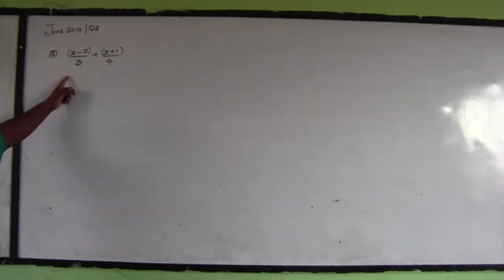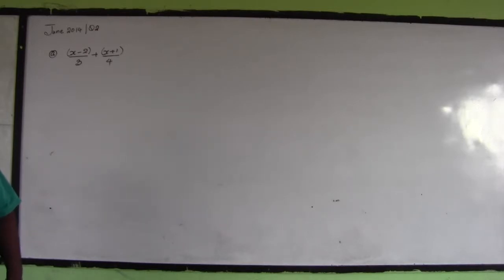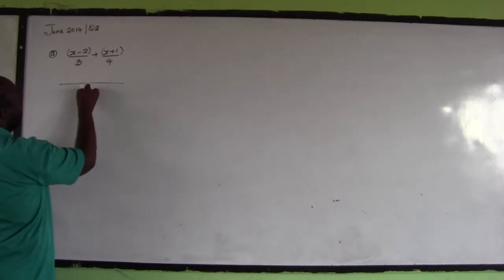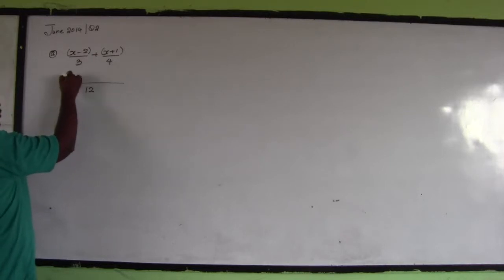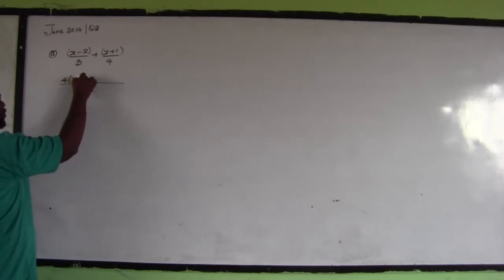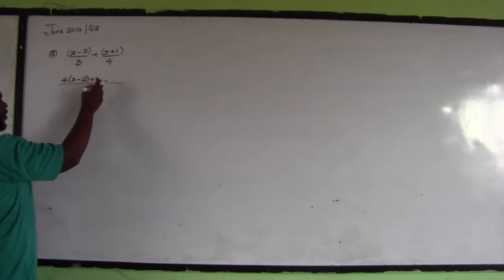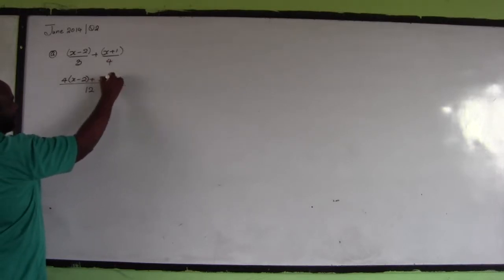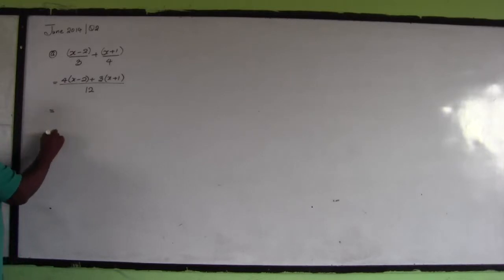Now, if you are adding or subtracting fractions and the denominators are different, you must find the LCM. The LCM of 3 and 4 is 12. So 3 into 12 — it's 4 times the numerator, which is x minus 2, plus whatever sign is here. Write it back: 4 into 12, so it's 3 times the numerator, which is x plus 1.